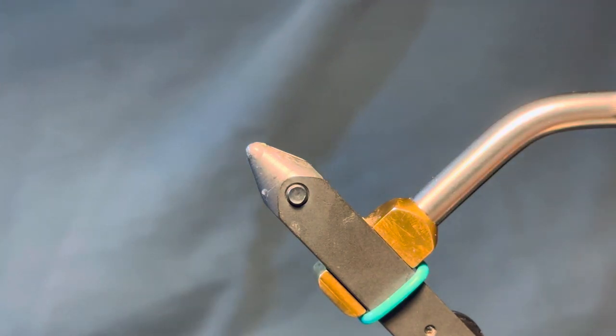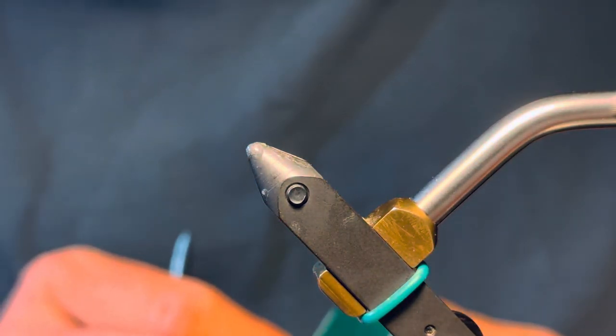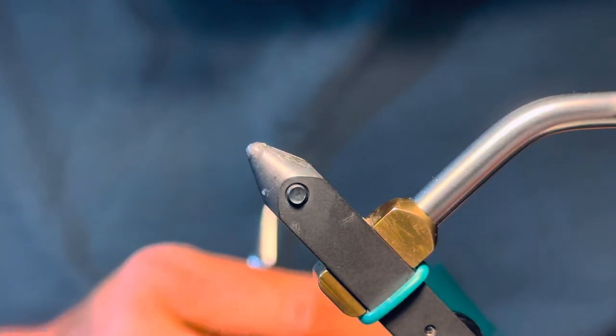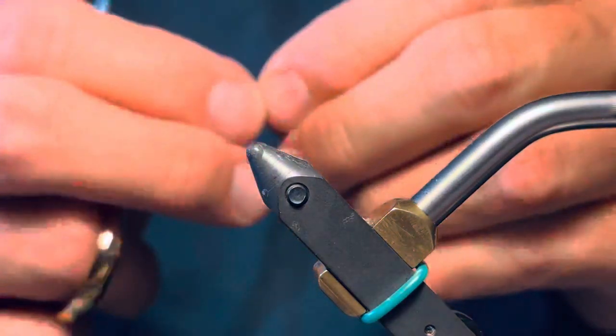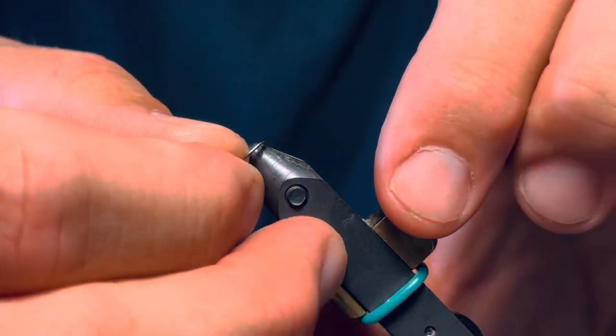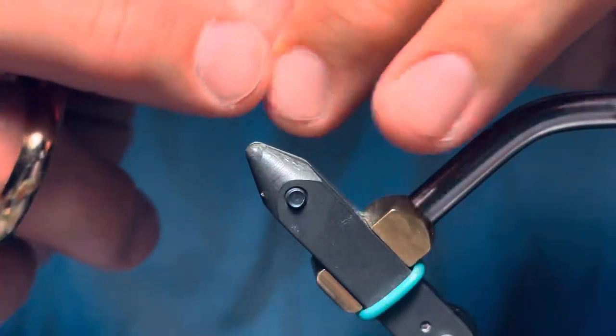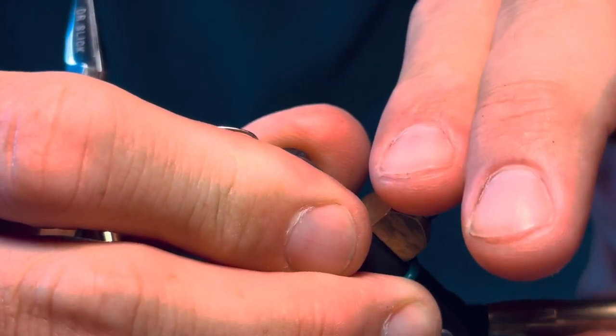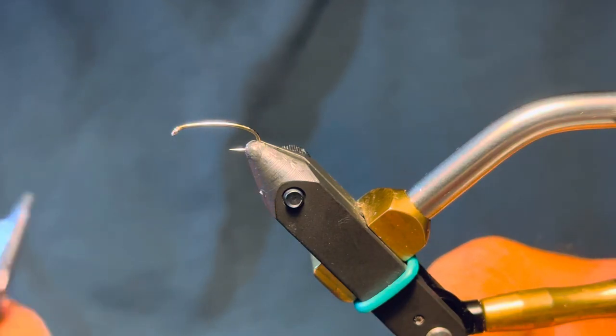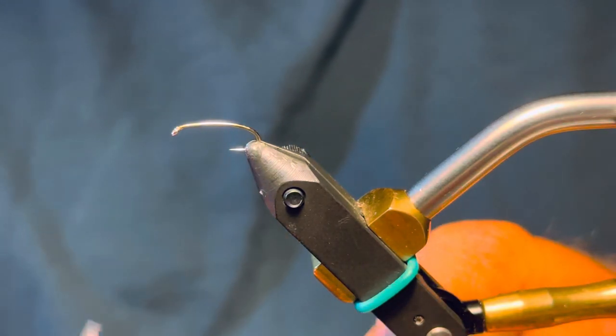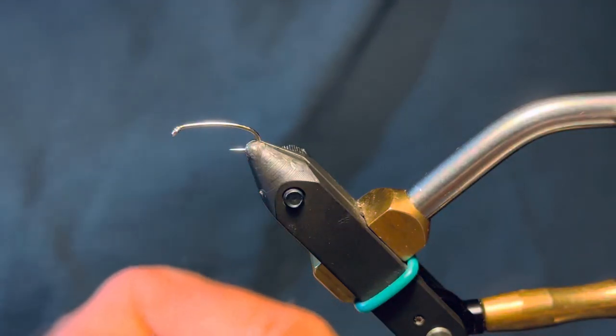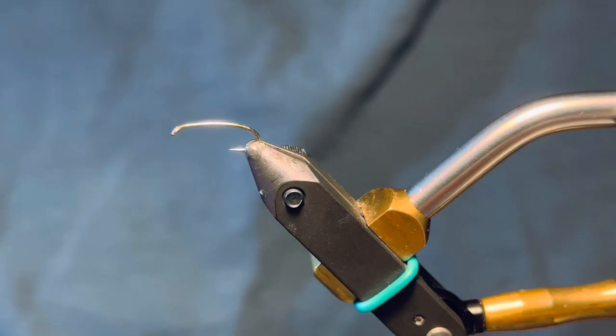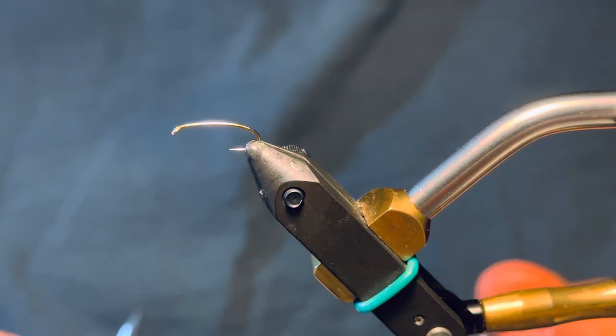So, four materials. We've got a size 14 hook. We're going to take that, put it in the vise and mash down that barb. Once your casting is a little more consistent, you can get into the ethical issues of barbs, but for now I highly recommend you mash down all your barbs because it makes it easier to take them out of your backside when you accidentally hook yourself. So there's our first material, the hook.